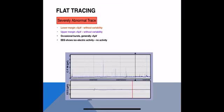This is a flat trace — again severely abnormal. Both the upper and lower margins are less than 5 and there is no variability in the trace. There are occasional bursts but the majority are less than 5 microvolts. The raw EEG is also almost completely flat with no activity.